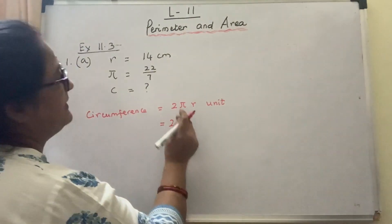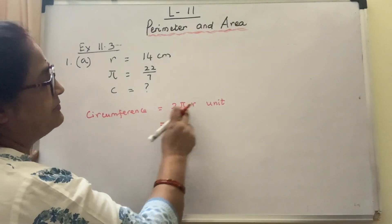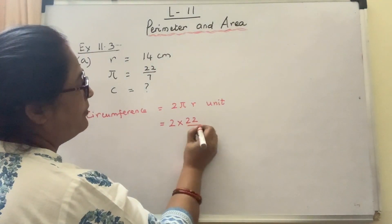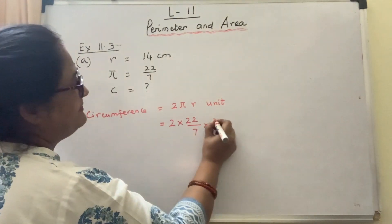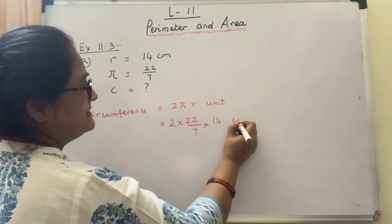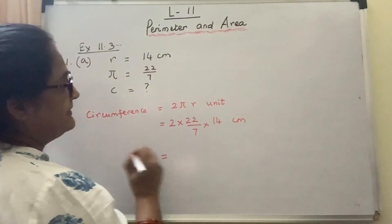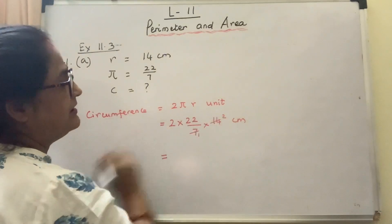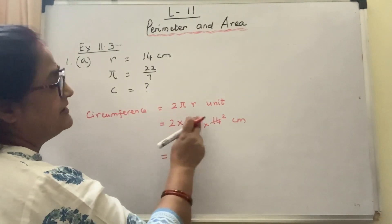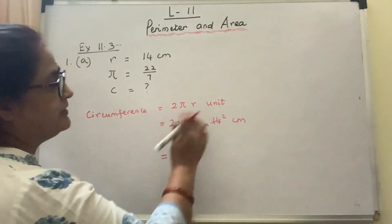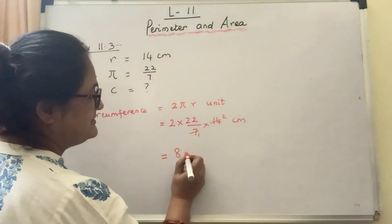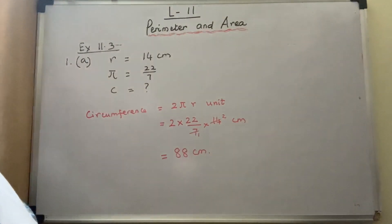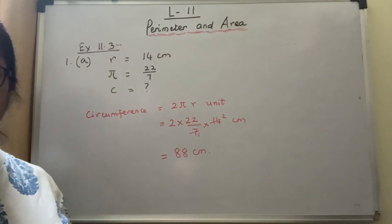So: 2 multiplied by 22 upon 7, multiplied by radius 14 cm. Where there is no sign in between, it is multiplication. Cancel whenever necessary: 7 into 2 gives 14, so 2 × 22 = 44, and 44 × 2 = 88 cm. So your circumference of the circle will be 88 cm.